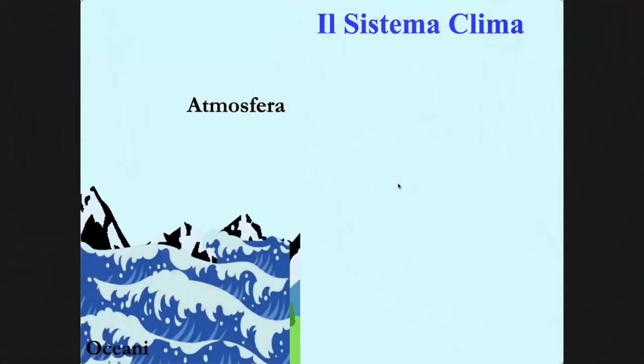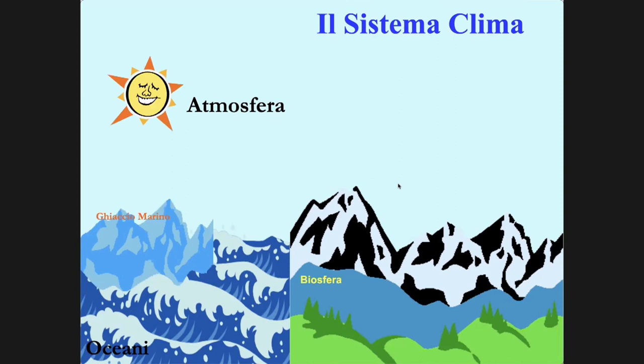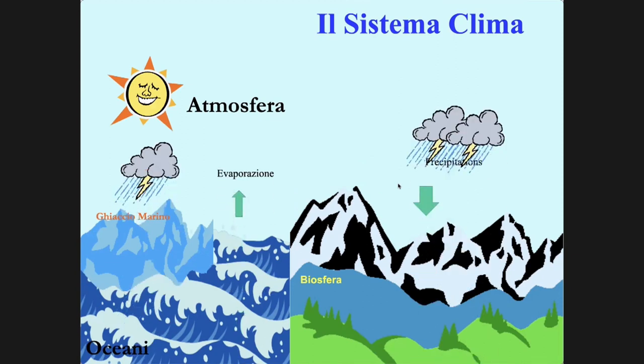It's not simple because these two sectors are strongly connected. The first thing I want to do is present the climatic system, because the climate is one of those things that we all think we know what it is, and so we need to start. The climate is made of atmosphere, ocean, and earth, and it's held together by water.